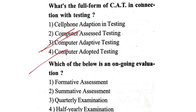Next question: Which of the below is an ongoing evaluation? First one, formative assessment. Second one, summative assessment. Third one, quarterly examination. Fourth one, half yearly examination. The correct answer is first one — formative assessment.